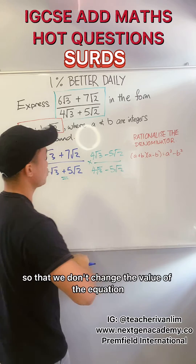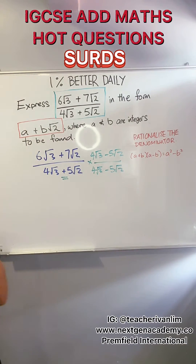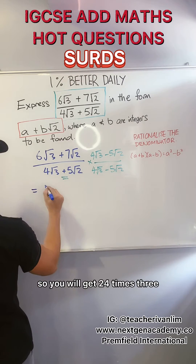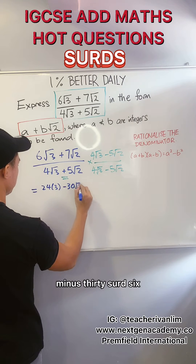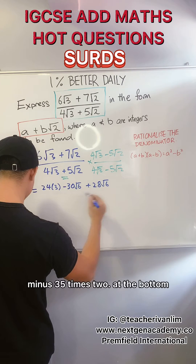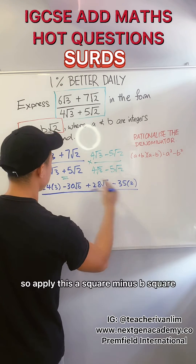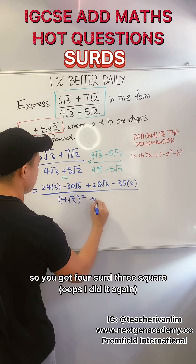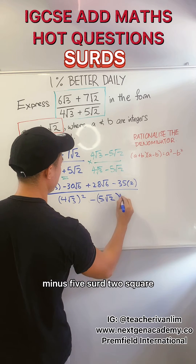The reason is that so we don't change the value of the equation. Let's cross multiply it. You will get 24 times 3 minus 36 plus 28√6 minus 35 times 2 at the bottom. Then apply a squared minus b squared, so you get (4√3)² minus (5√2)².